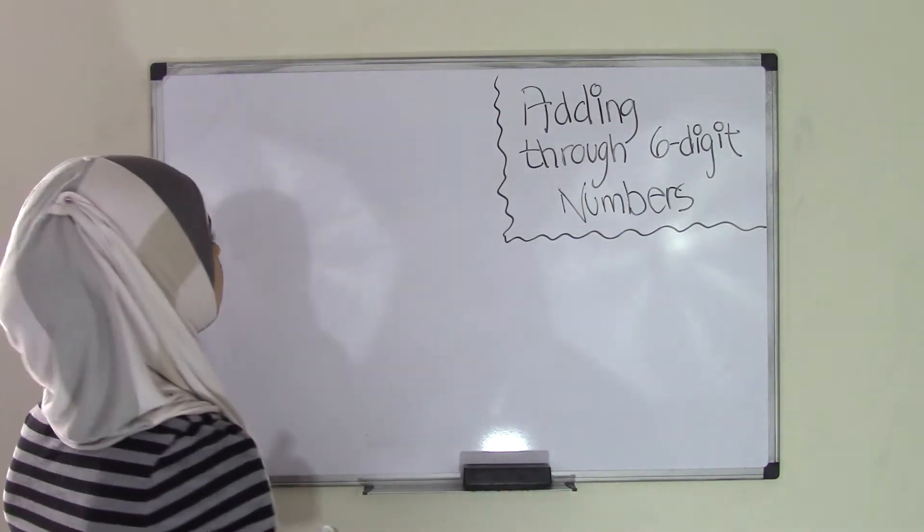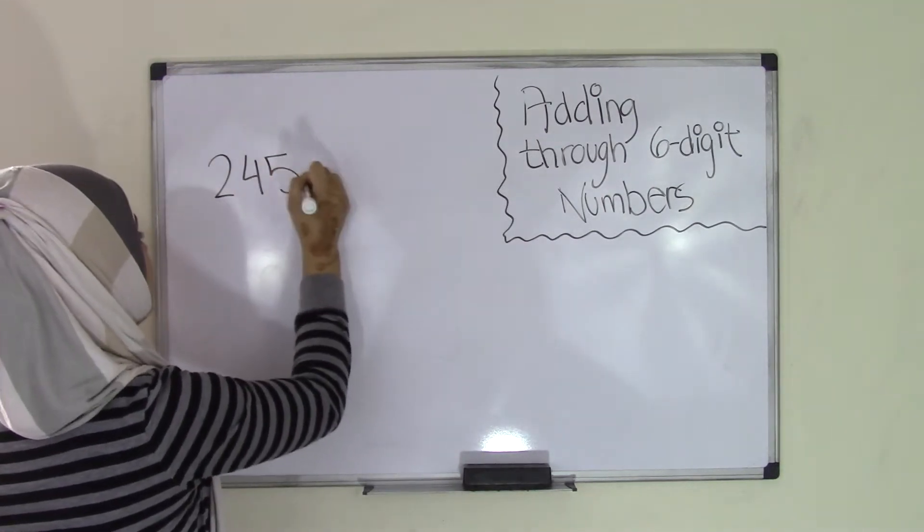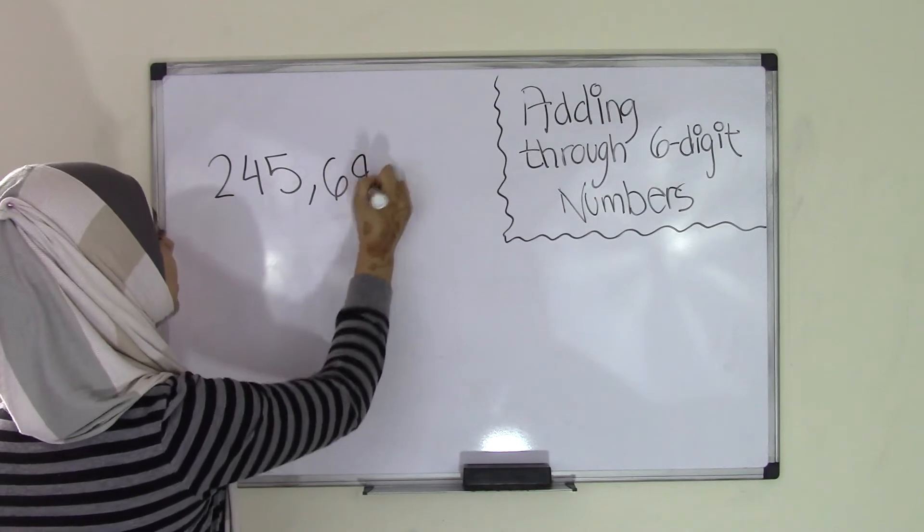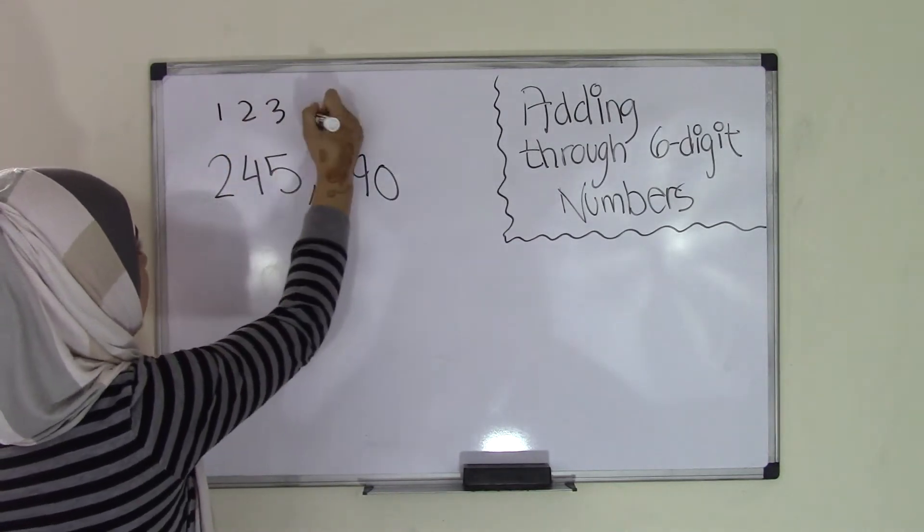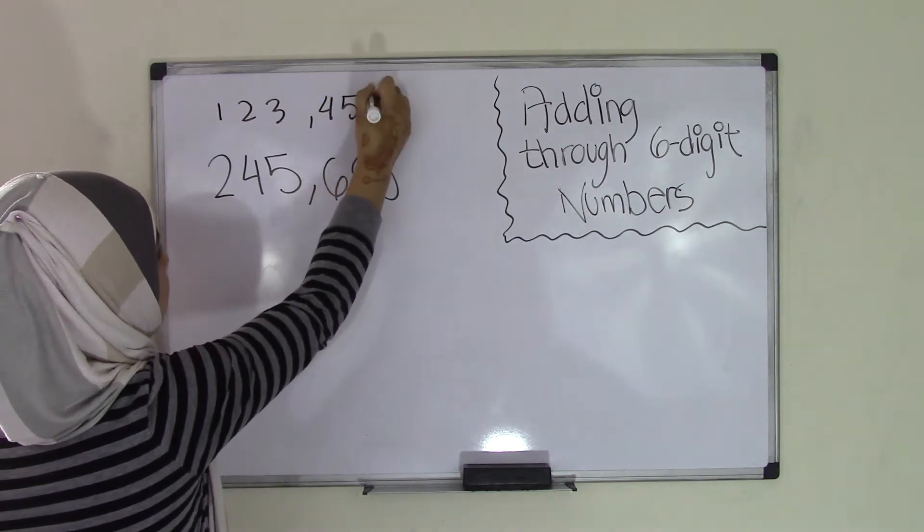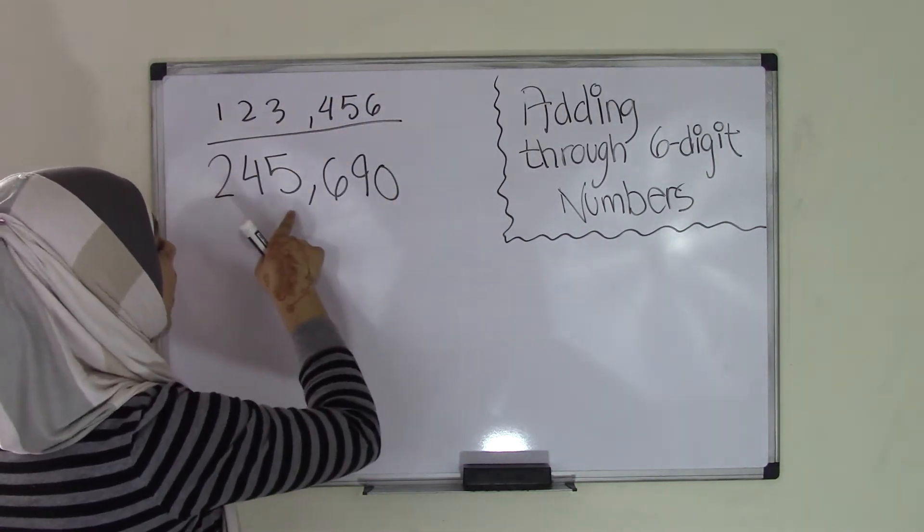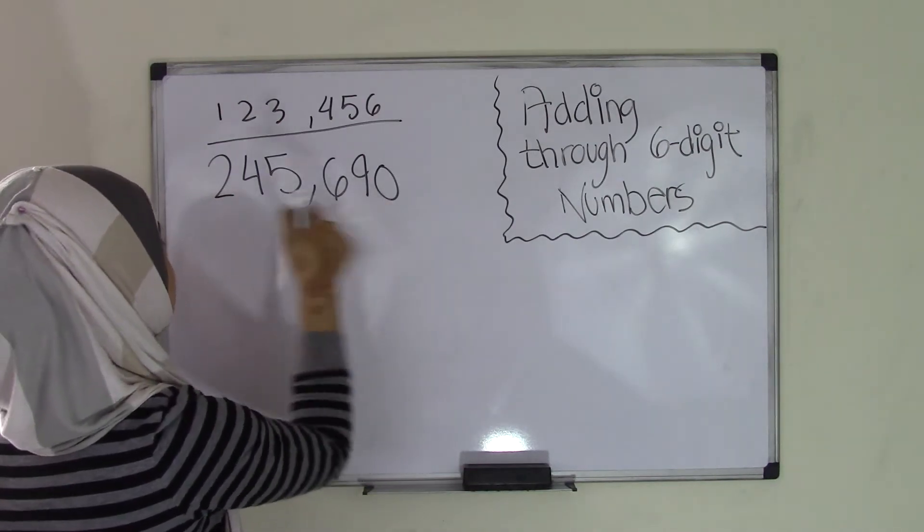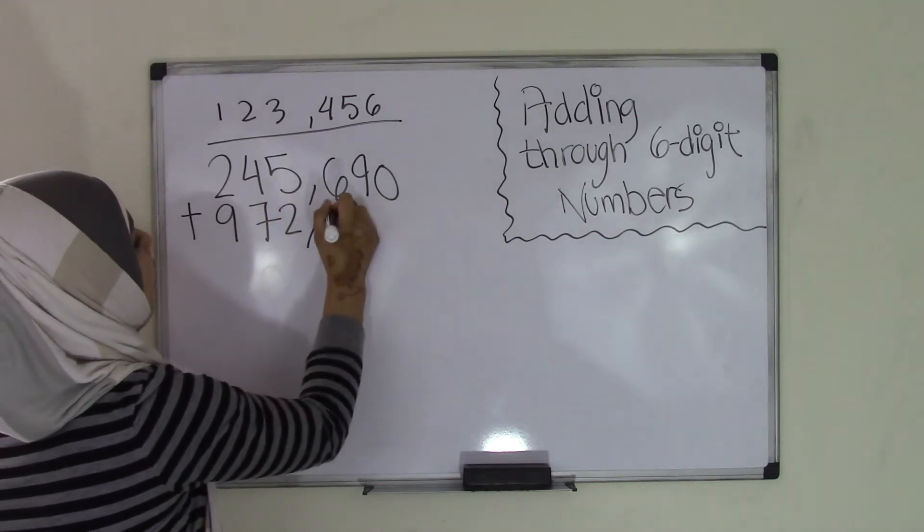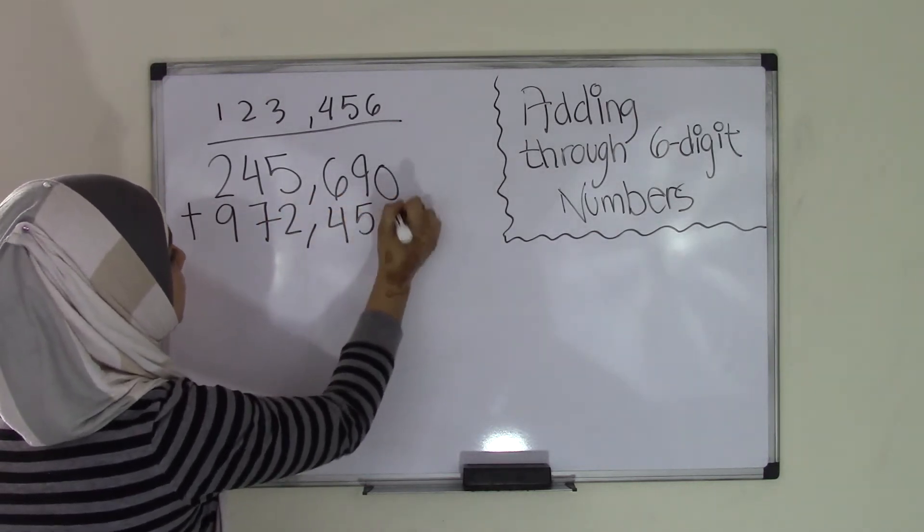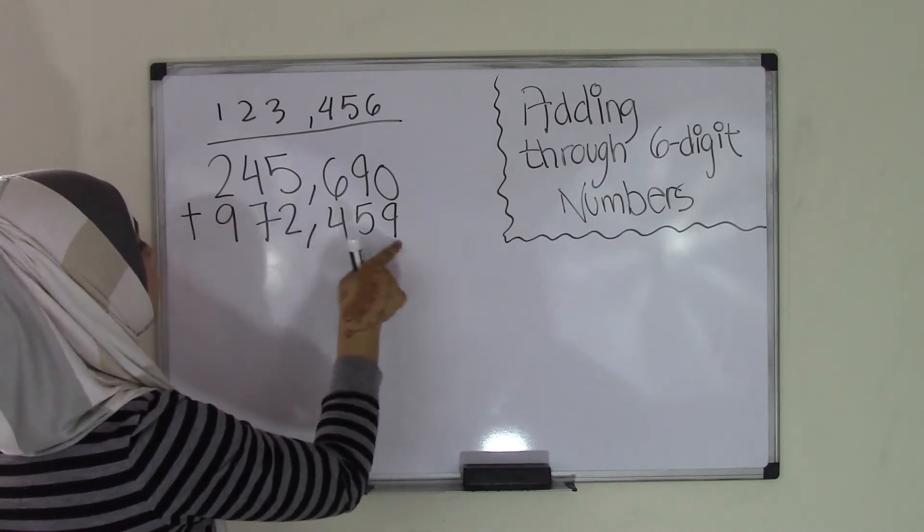So today I'm going to be using the two numbers 245,690. So that's one six-digit number because this is 1, 2, 3, 4, 5, 6 digits, okay? So 245,690 plus 972,459.